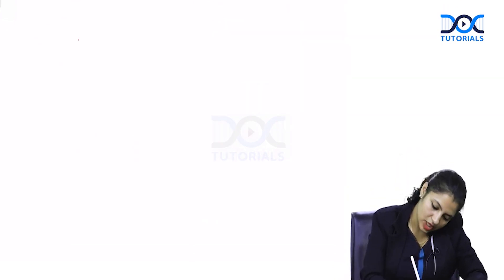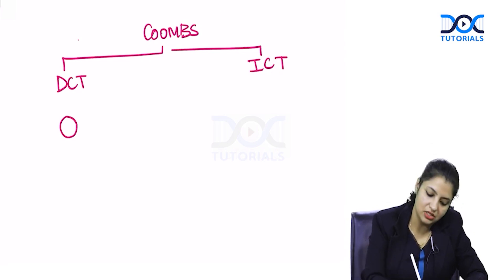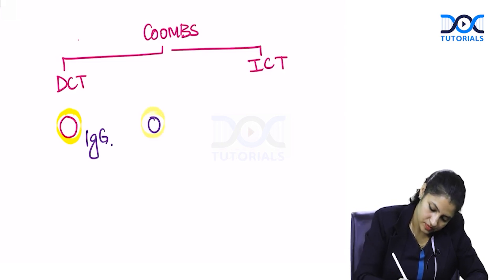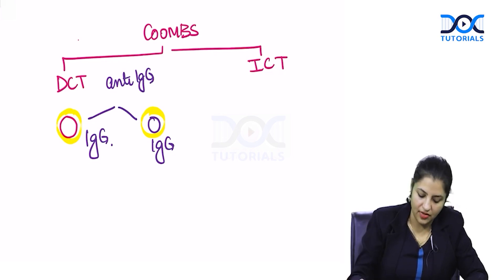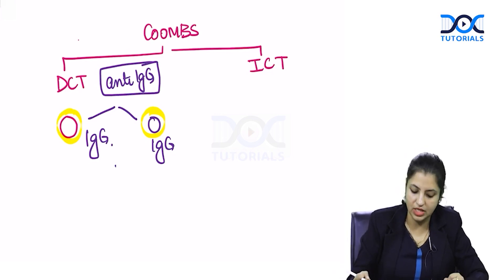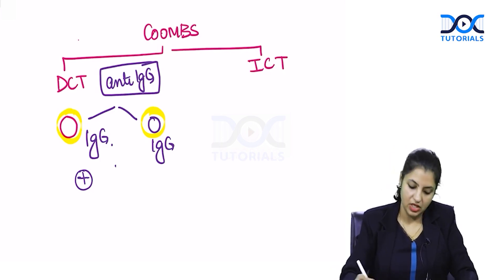So direct Coombs test — remember we have two types of Coombs test. We have direct Coombs test and indirect Coombs test. Direct is when you are doing it directly on the cells. So cells are coated by IgG antibody, and you just put anti-IgG, which is Coombs antiserum, and it causes agglutination. That is DCT positive — these are IgG-coated cells where agglutination is positive.